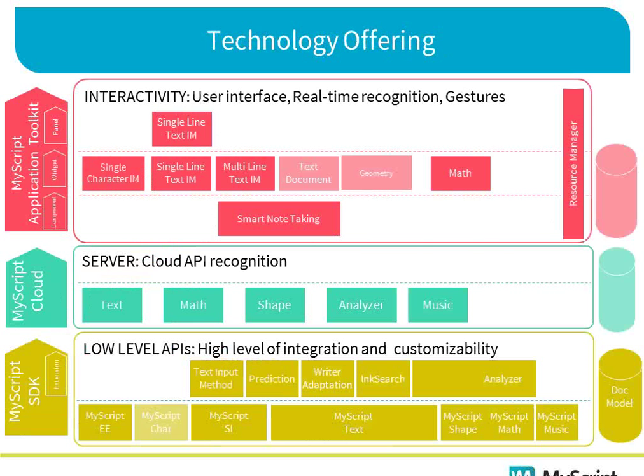What I want to expose here is that whether you go SDK, cloud, or ATK, we have solutions covering four main technologies: handwriting text recognition, math recognition, shape recognition, and music recognition. Those are really the four main types of recognition engines that we have today.